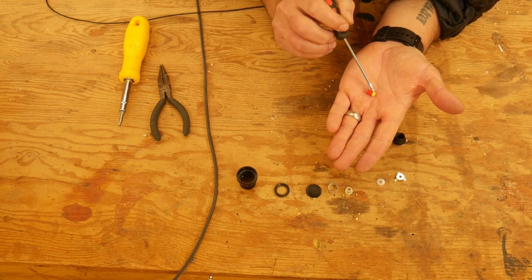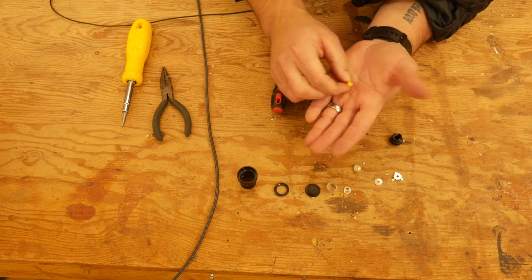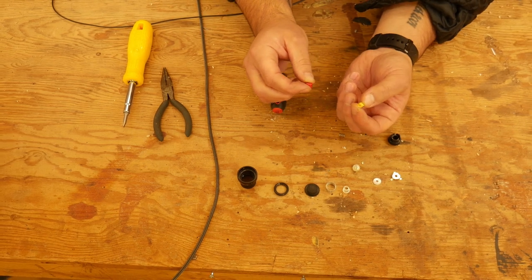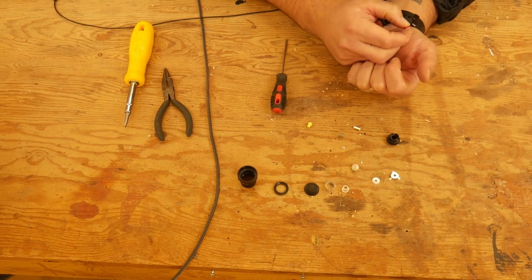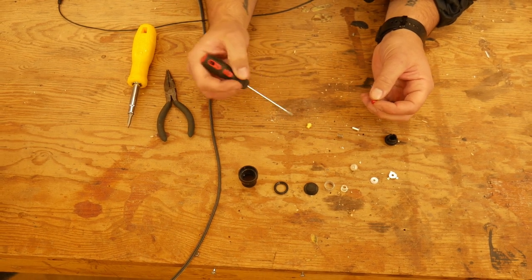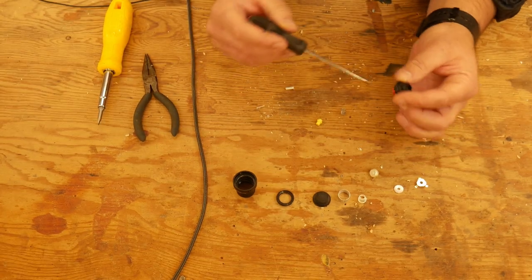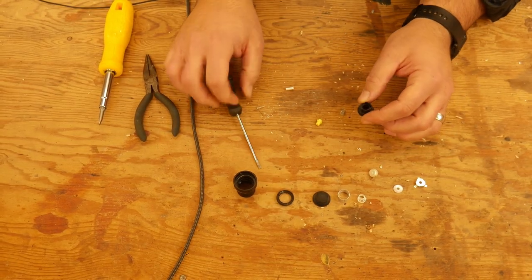And right here, that yellow clicky piece, much like on the inside of a clicky pen, that is what's causing the entire unit to click. So what we're going to do is we're just going to reassemble this entire unit without that yellow clicky piece. We'll put the red cap back through there.